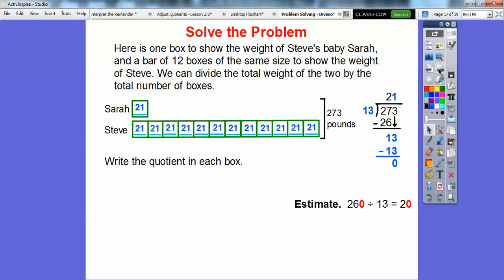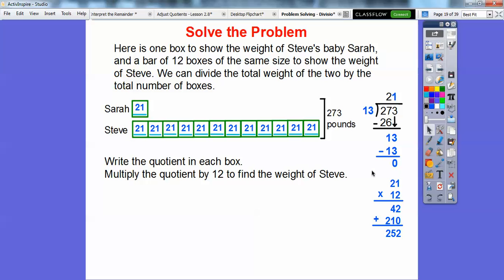We're going to write the number 21 in each of those boxes right there. And then we'll multiply the quotient by 12 to find Steve's weight. So here's 21 times 12 when we get 252. So that's how much the gorilla Steve weighs. And then the baby Sarah weighs 21 pounds.